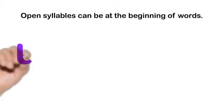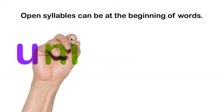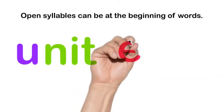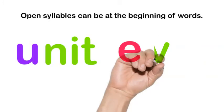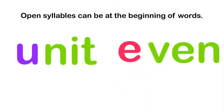Open syllables can also be at the beginning of a word. Here we have the word unit. If I broke it the other way, it would say un-it. And then I have this word even — it's not ev-en, it's even. So we can have an open syllable at the very beginning of a word as well as in the middle of a word. We can even have an open syllable at the end of a word.